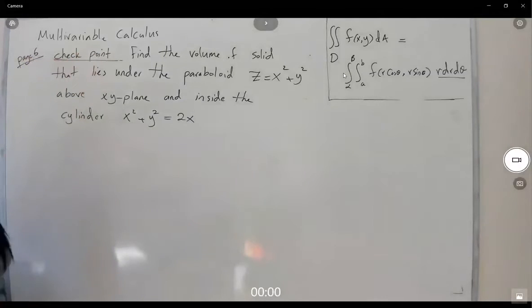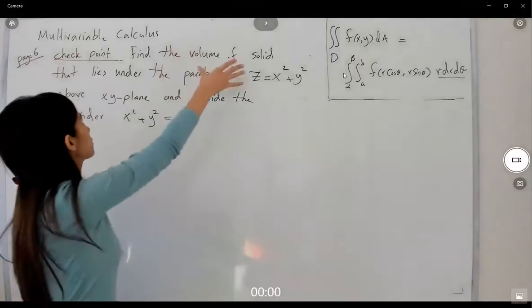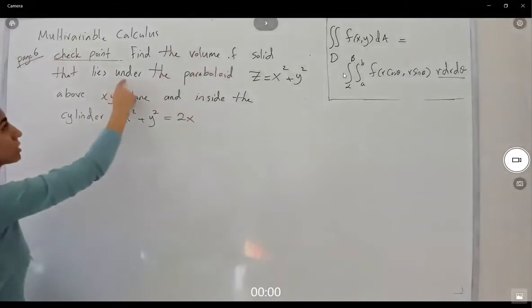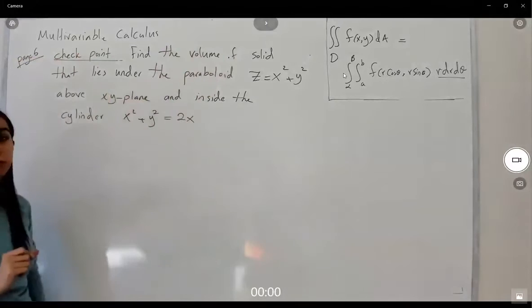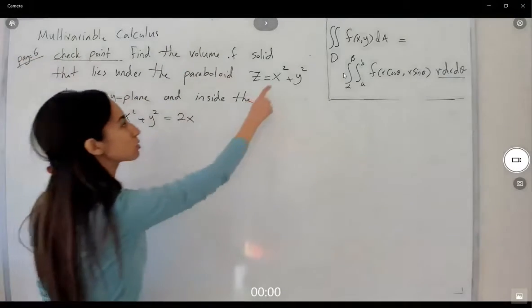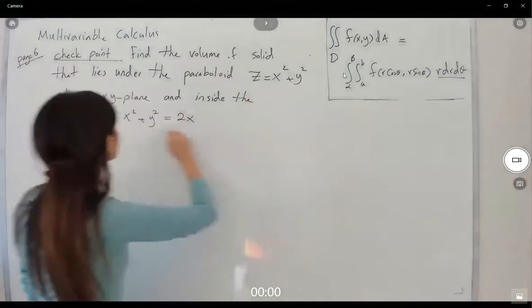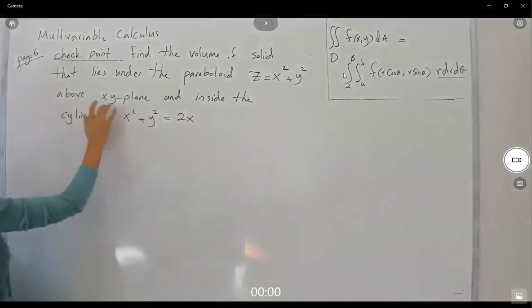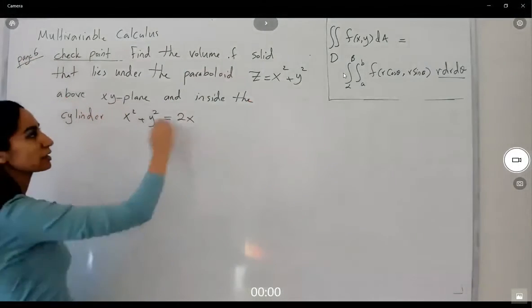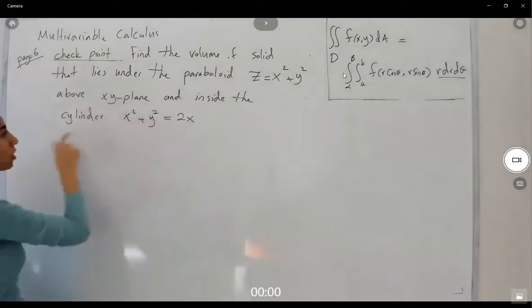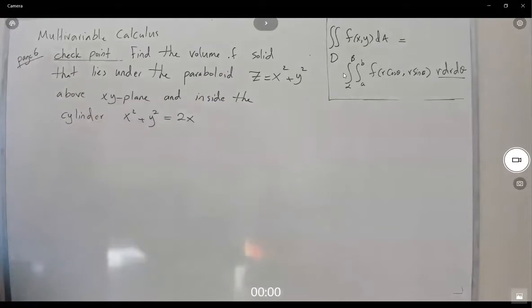On page 6 we have another shape point. Find the volume of a solid that lies under the paraboloid z equals x squared plus y squared, above the xy-plane, and inside the cylinder x squared plus y squared equals 2x.